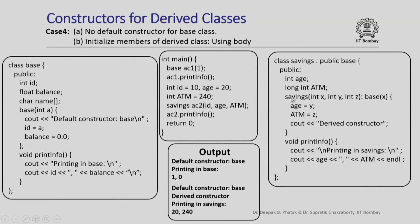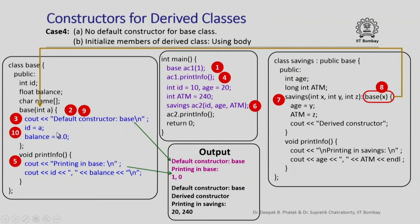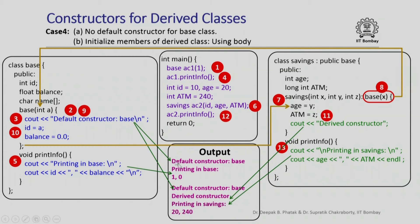Here is yet another example where we have initialized data members of the derived class in the body of the constructor instead of using initialization lists. We have the same sequence: the base constructor is invoked with a specified argument, prints its statement, does initialization, returns, and now there are no further initialization lists. So it executes the body of the savings constructor, which assigns the values of y and z to age and ATM respectively, and finally prints 'derived constructor'. After that, print info prints the same two lines as before.